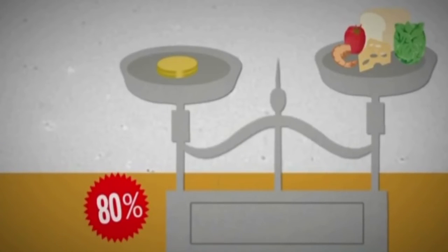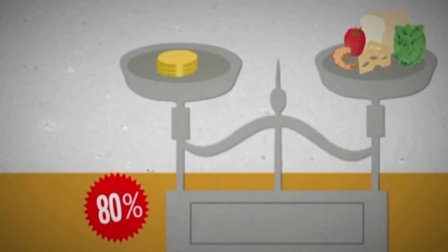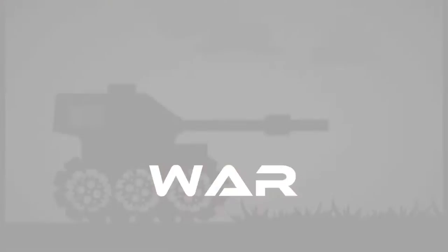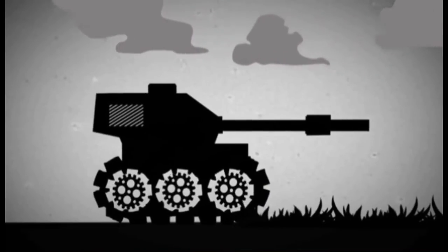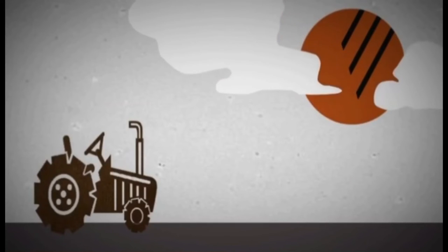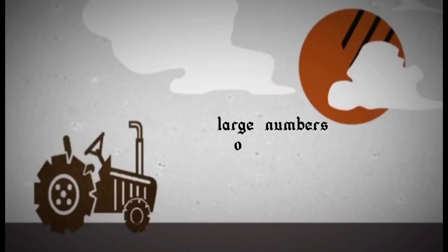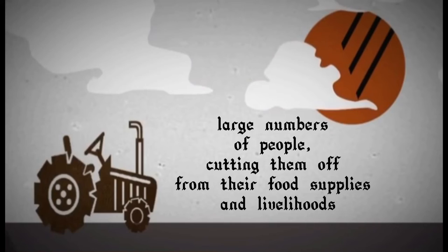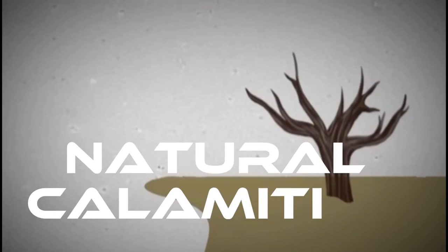Let's move on to the causes of food insecurity. First is poverty — people who are categorized below the minimum wage of their various countries cannot sustain the financial requirements of the rapid development of the world. The second is war — combat can cause food shortage and the disruption of economic activities. Additionally, war triggers the displacement of large numbers of people, cutting them off from their food supply and livelihood.